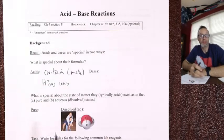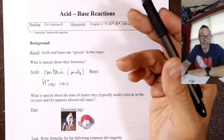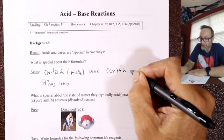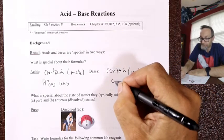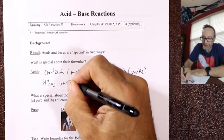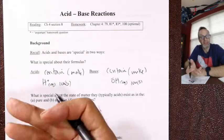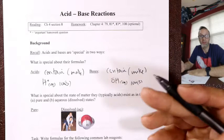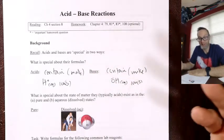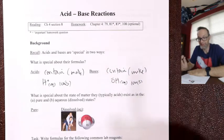So HCl dissolves to make H⁺ and Cl⁻ — the H⁺ dissolved is the acidic ion. Bases similarly contain or make OH⁻ aqueous ions. Some acids make one H⁺, some make two, occasionally three. Similarly, some bases make one OH⁻, some make two, some make three — each formula unit makes an H⁺ or OH⁻.